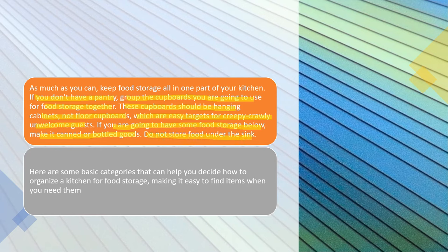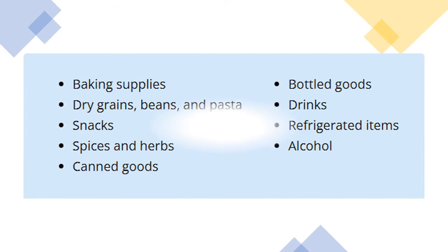Do not store food under the sink. Here are some basic categories that can help you decide how to organize a kitchen for storage, making it easy to find items when you need them: baking supplies, dry grains, beans and pasta, snacks, spices and herbs, canned goods, bottled goods, drinks, refrigerated items, and alcohol.